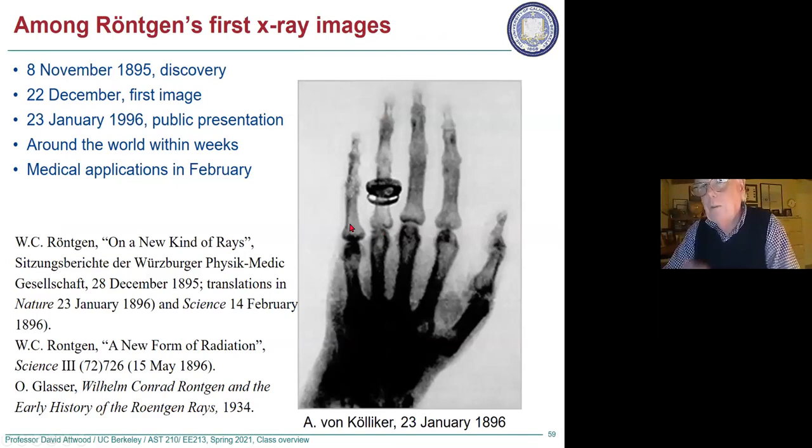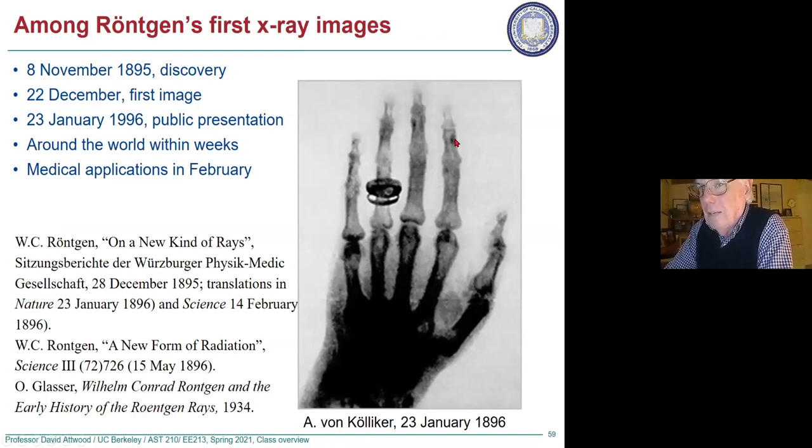Now we're getting into imaging and optics — I mixed them together, but they're separate chapters. This is not the first image produced in Röntgen's laboratory — the first one was of Frau Röntgen's hand and it's kind of blurry. I don't generally use that because people get the sense that in Röntgen's time x-ray imaging wasn't quite as precise as it is now, which is absolutely not true.